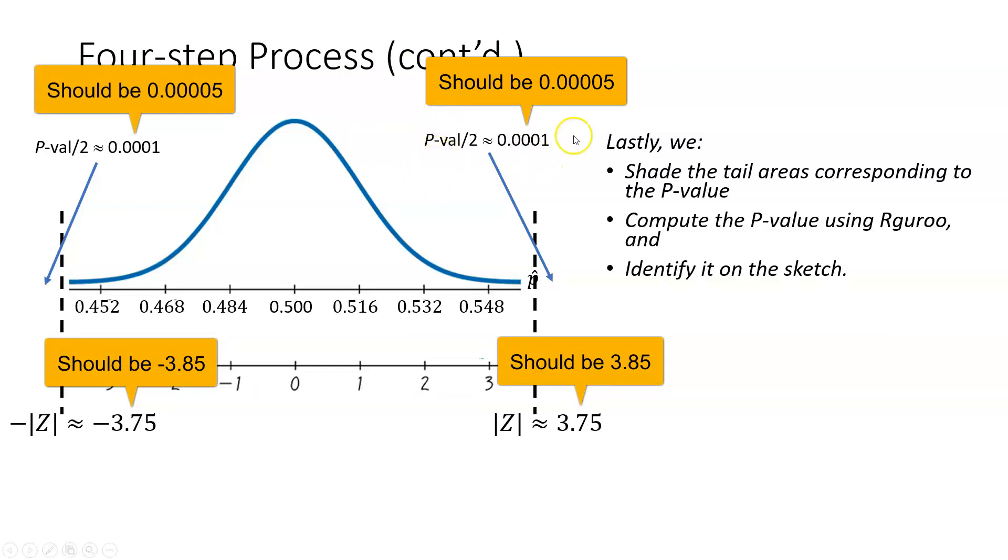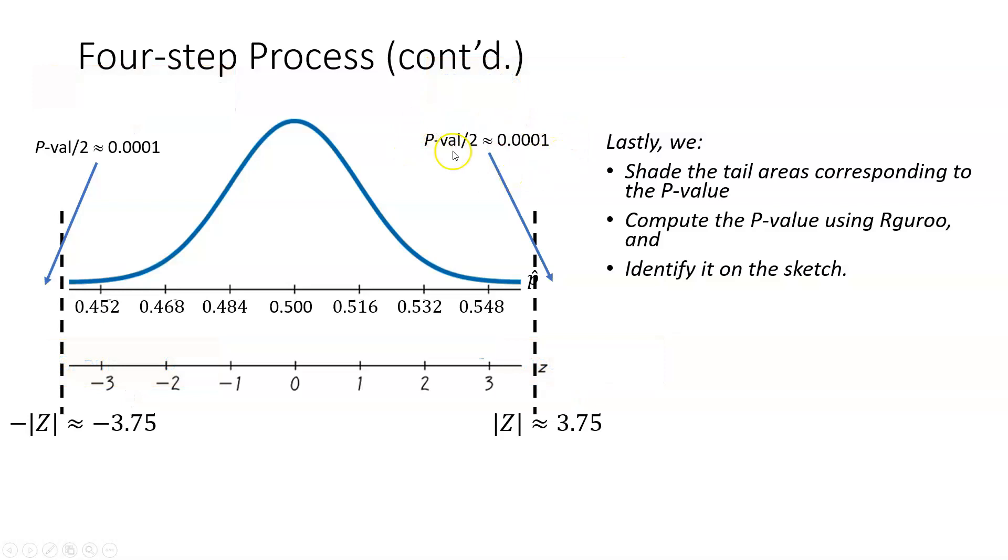Let's assume that I found the P-value using R guru, and I would then go ahead and identify that on the sketch. Half of the P-value is on the right, so the P-value, which turns out to be approximately 0.0002, half of it is labeled here as 0.0001, and half of it is labeled on the left as 0.0001. That completes our sketch.